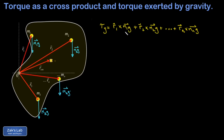I can attach that scalar quantity to either one of the vectors in the cross product, or factor it out in front. In this case I'll move each mi next to the corresponding position vector. Each of these is then crossed into a g vector — magnitude g pointing straight down.